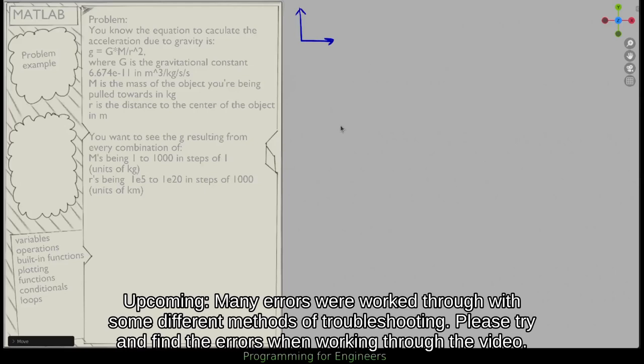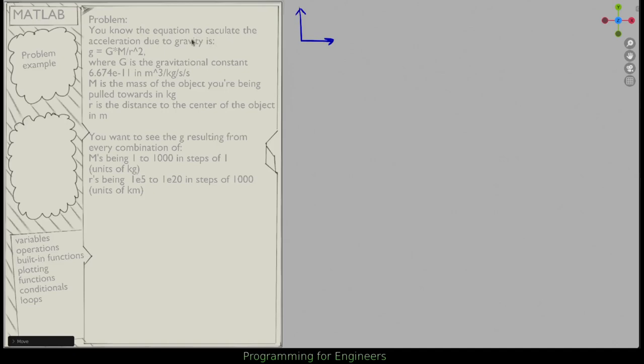I have this problem. I know the equation to calculate the acceleration due to gravity is little g, the acceleration due to gravity, is capital G, the gravitational constant, which I have here.